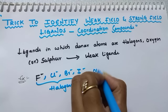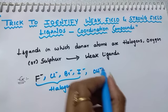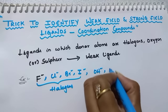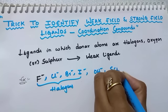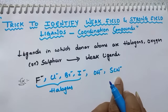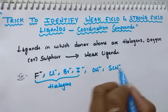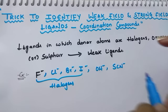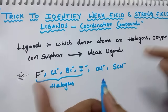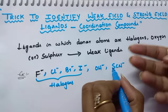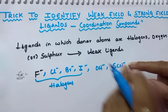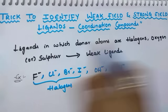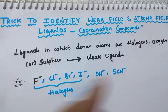OH⁻ — oxygen is the donor atom, so it is a weak field ligand. SCN⁻ is actually an ambidentate ligand. Whenever you see such a ligand, you have to look at the donor atom. If sulfur is the donor atom, it is a weak field ligand.